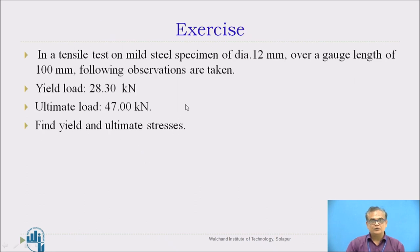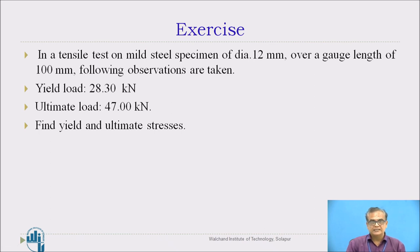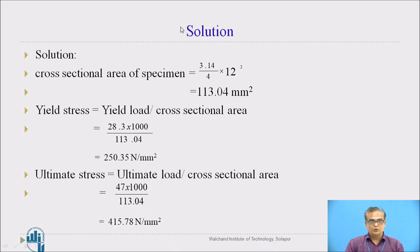Here is an exercise: In a tensile test on a mild steel specimen of diameter 12 mm over a gauge length of 100 mm, the following observations are taken — yield load 28.3 kN, ultimate load 47 kN. Find the yield and ultimate stresses. Solution: Cross-section area is calculated as π/4 × d². Yield stress equals yield load divided by cross-section area, giving 250.35 N/mm². Ultimate stress equals ultimate load divided by cross-section area, giving 415.78 N/mm².